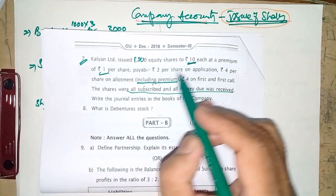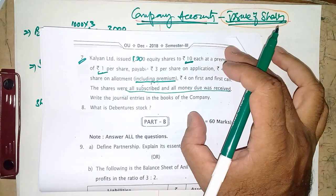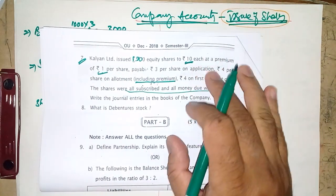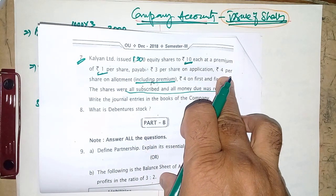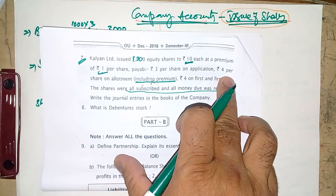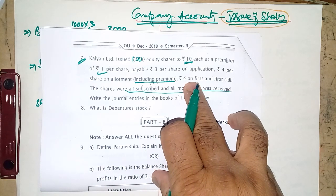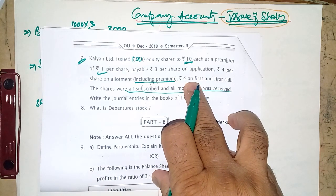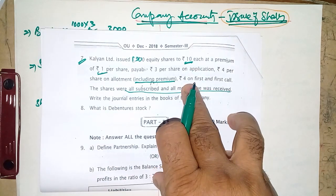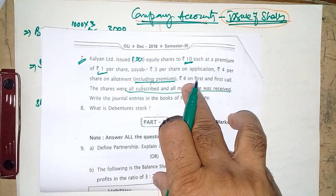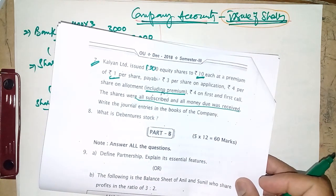The share price is ₹10 and ₹1 premium, so the company will collect ₹11 in total: ₹3 on application, ₹4 on allotment (which includes ₹1 premium), so together ₹7, and the final call is ₹4, totalling ₹11 — of which ₹10 is towards capital and ₹1 towards premium. We will now work out the journal entries.